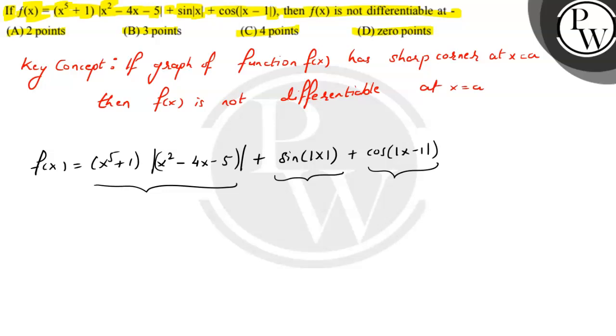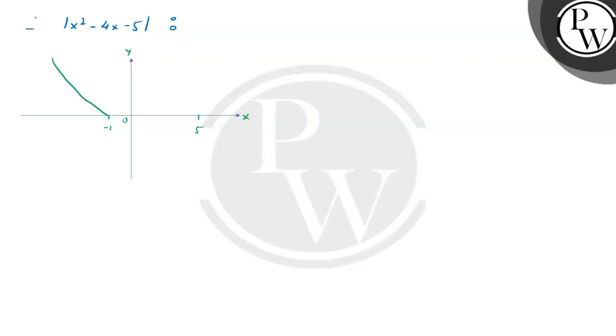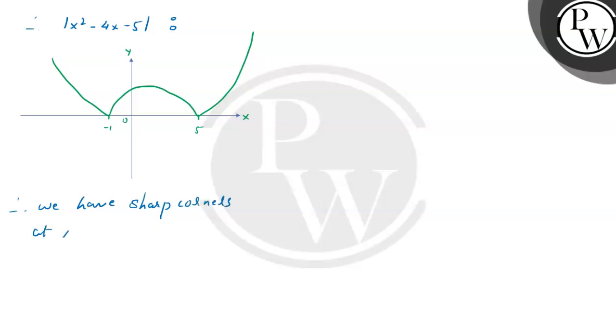Let's look at the graph of |x² - 4x - 5|. Here we have the x-axis and the y-axis. The graph shows two sharp corners at x = -1 and at x = 5. Therefore, we have sharp corners at x = -1 and x = 5.